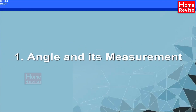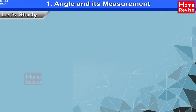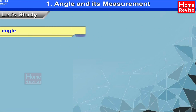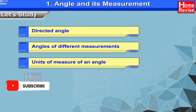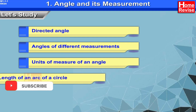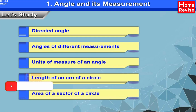Chapter 1: Angle and its Measurement. In this chapter, we are going to study directed angle, angles of different measurements, units of measure of an angle, length of an arc of a circle, and area of a sector of a circle.